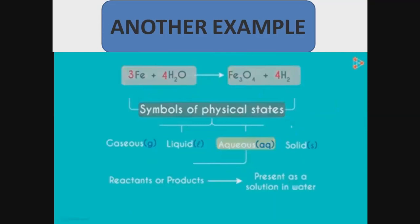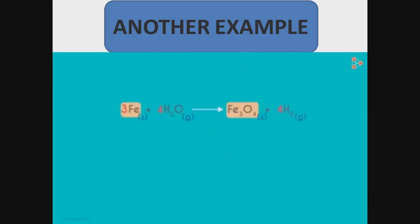After balancing, in your textbooks you will see symbols like (s), (g), (l), or (aq) written next to chemical formulas. These are symbols for the physical state of substances. If a substance is in gaseous state, we use (g); liquid state uses (l); solid state uses (s); and aqueous solution uses (aq). Aqueous solution means any substance dissolved in water on the reactant or product side.